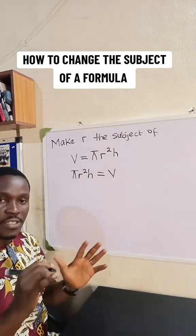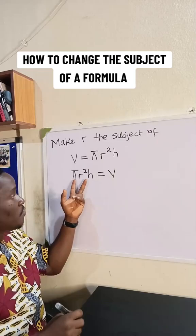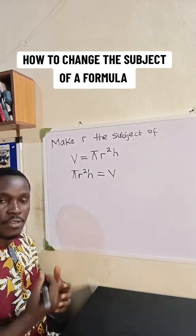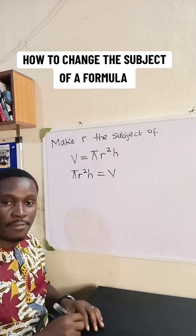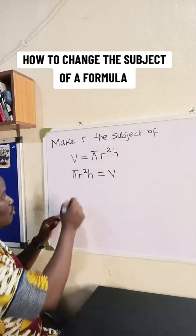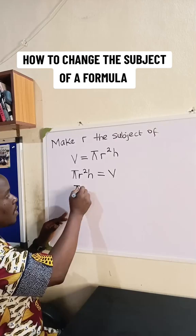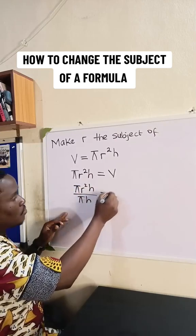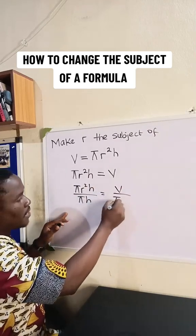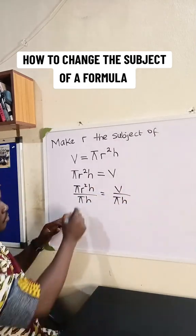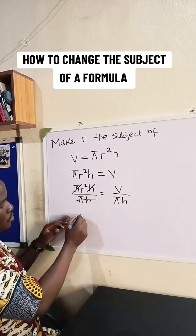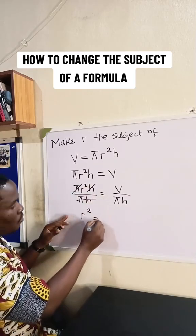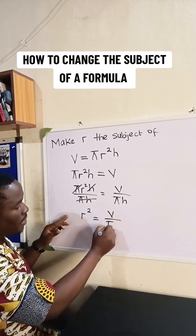So we need to evacuate these values. So let's remove pi and h together. How do we do that? We divide both sides of the formula by pi h. So we're going to have pi r squared h all over pi h is equal to V all over pi h. So this is going to cancel out these two. So we have r squared is equal to V all over pi h.